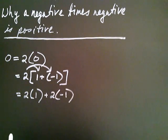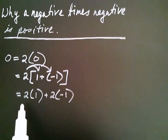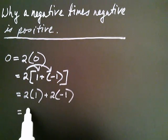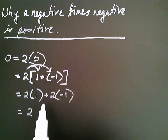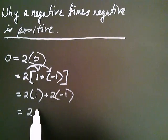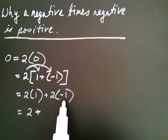At this stage, one times anything is just that number, so one times two equals two. Then plus — the question is: what is two times negative one?